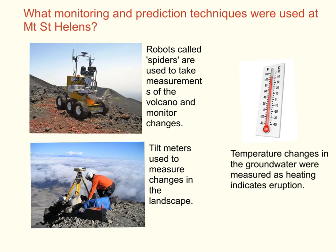At Mount St Helens, the following monitoring and prediction techniques were used in 1980. Firstly, a robotic device called a spider was used to take measurements and monitor changes. Tilt meters were placed on the slopes to measure changes in the slope angle. Temperature changes in the groundwater were also measured to indicate whether an eruption was imminent. That completes this presentation on Mount St Helens' May 18, 1980 eruption.